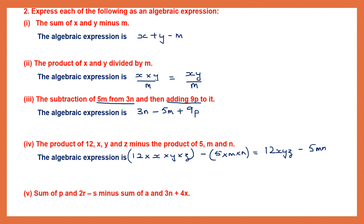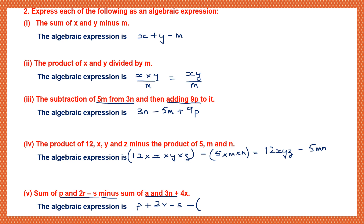Question 5: Sum of P and 2R minus S, minus the sum of A and 3N plus 4X. Taking the first part: P + 2R − S, then minus the second part in brackets: (A + 3N + 4X). So the algebraic expression is P + 2R − S − (A + 3N + 4X).